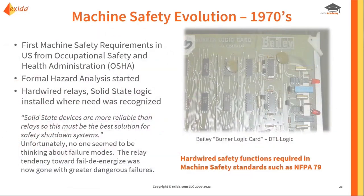As we move forward into the 1970s, in the United States we had our first machine safety risk assessment requirements from the Occupational Safety and Health Administration, or OSHA. Europe has tended to be a little bit ahead of the U.S. when it comes to a lot of these machine safety standards, so some of them started to gain traction a little bit earlier. We finally started to see more of a formal hazard analysis as a way to identify where safety functions were required.